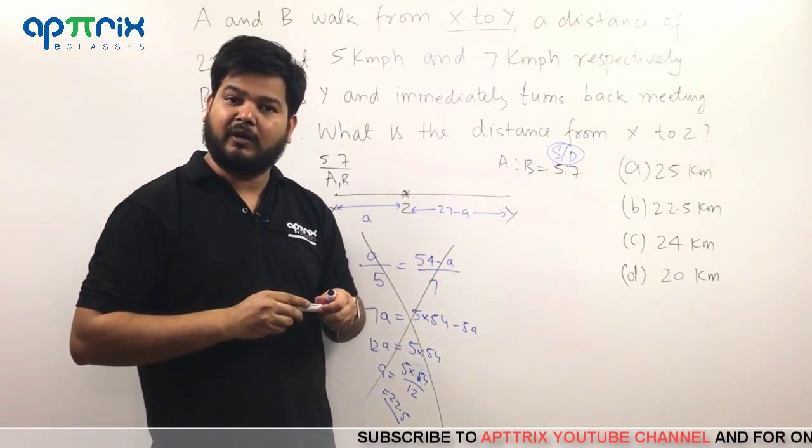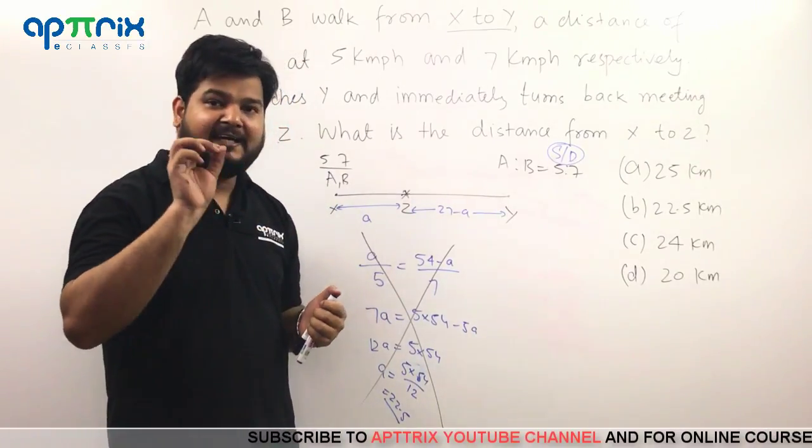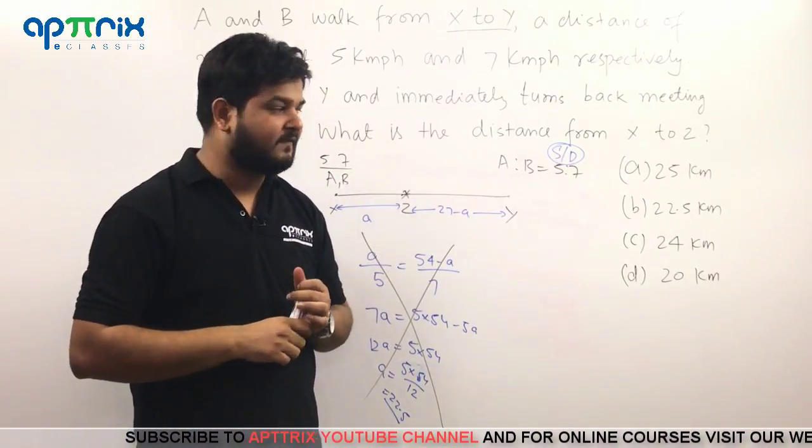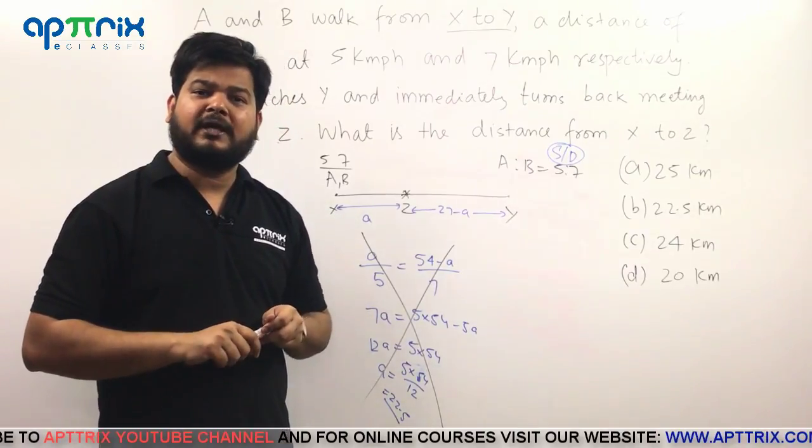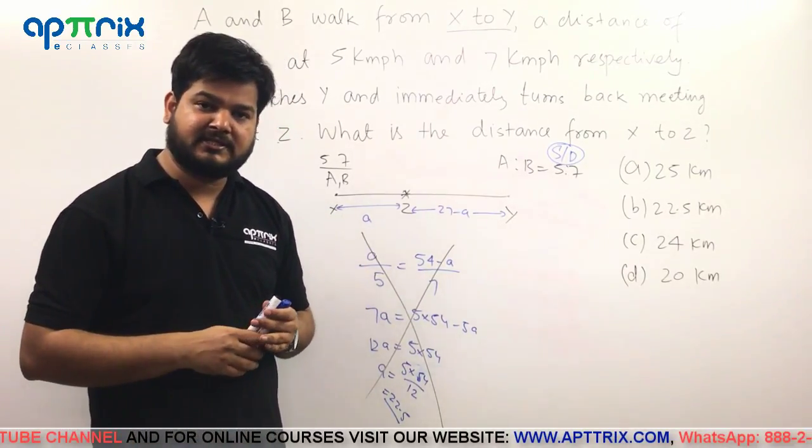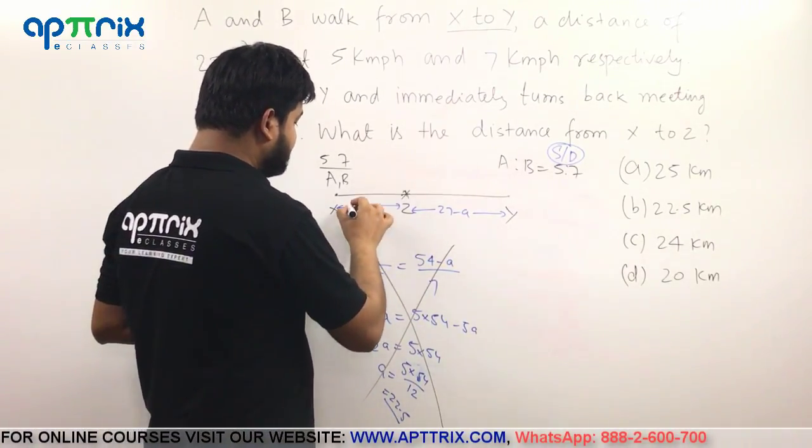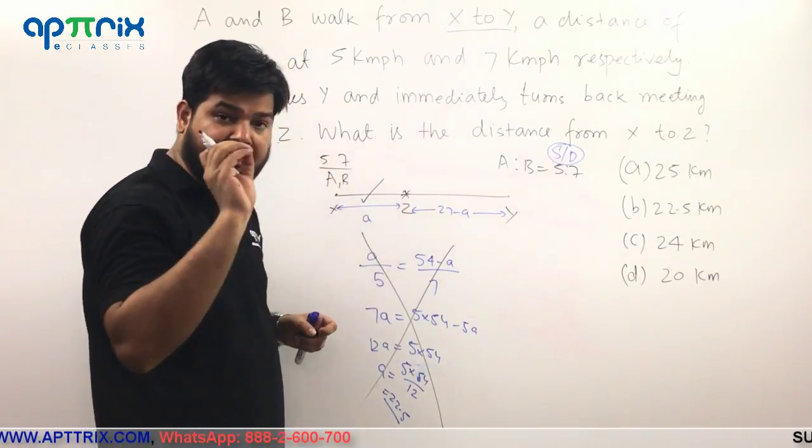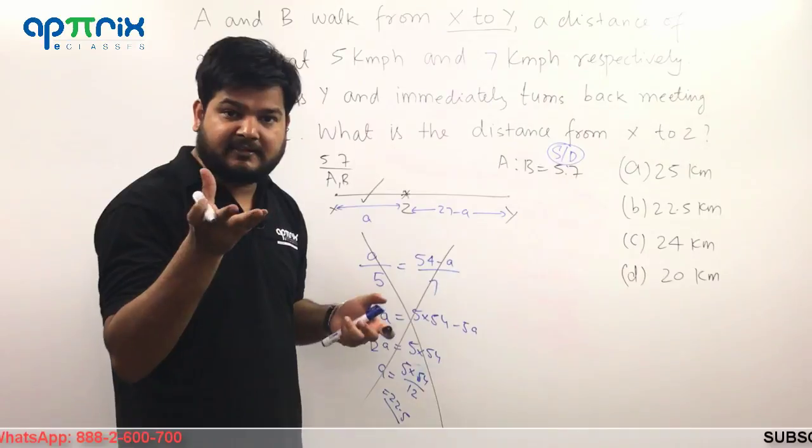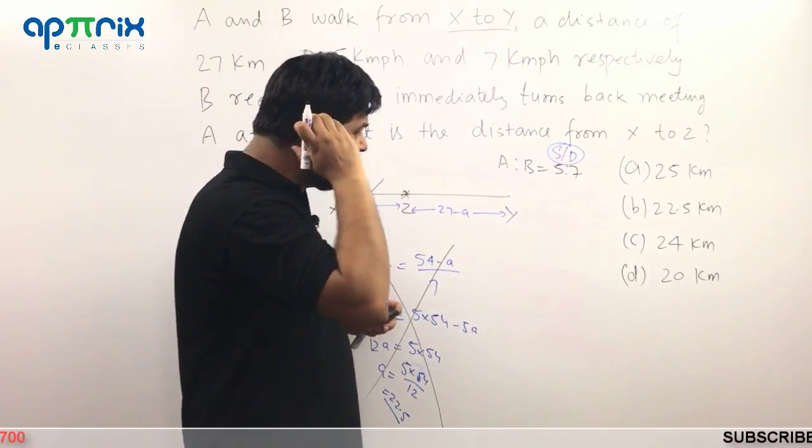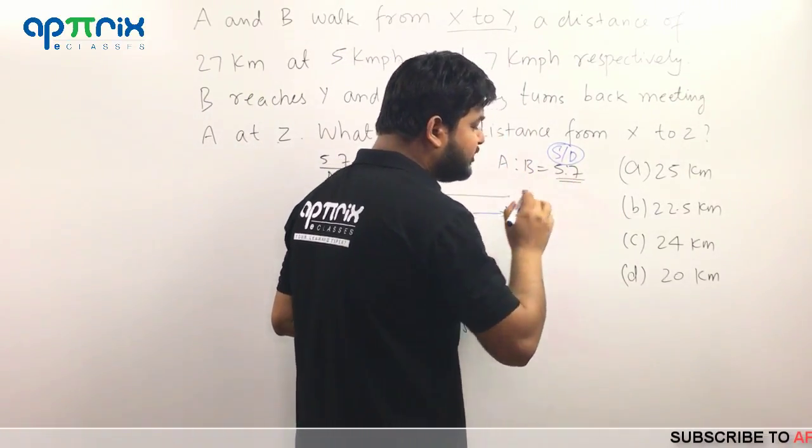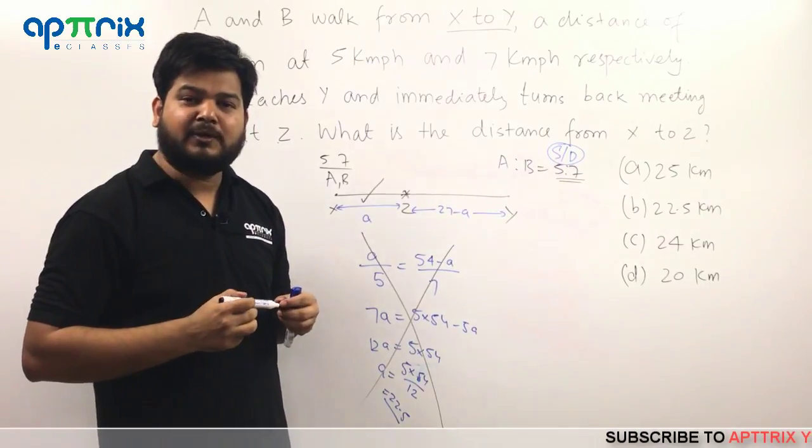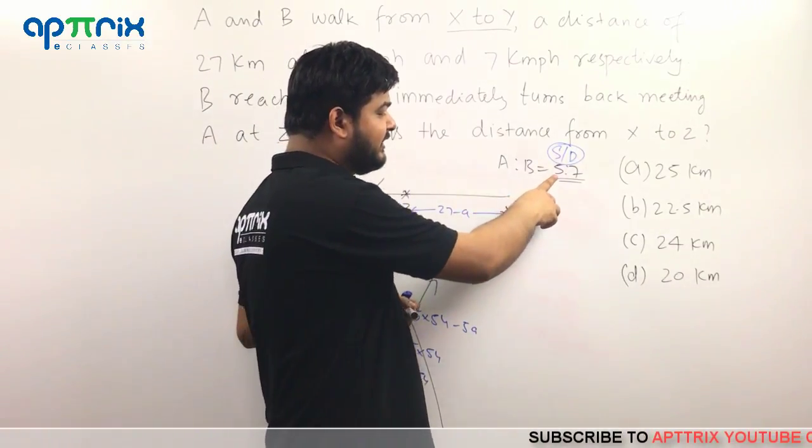Now ask yourself one question. If I have the idea of distance ratio, that is 5 ratio 7. How can I calculate individual distances? Because, look, distance between X to Z is nothing but the distance covered by A. The distance covered by A. So if I have this knowledge of the ratio of the speed, how can I get the distance traveled by A?